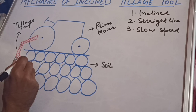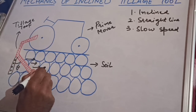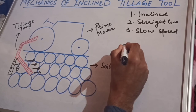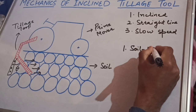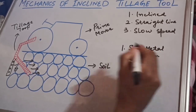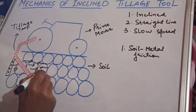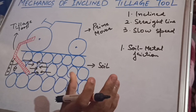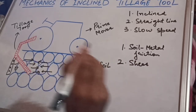When this tillage tool moves forward, it exerts a certain amount of force on soil particles, and soil particles come in contact with the tillage tool. The first process parameter is soil-metal friction. The soil exerts an equal and opposite force according to Newton's third law of motion, and there is a kind of shear failure plane that is formed.